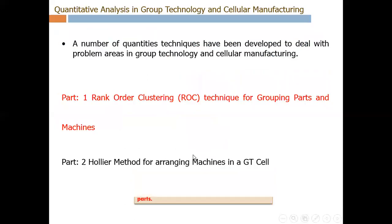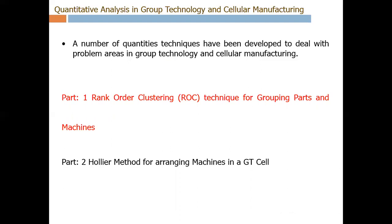Now when we talk about quantitative analysis in group technology and cellular manufacturing, there are various techniques available to deal with problems related to group technology and cellular manufacturing. We will mainly focus on two techniques. In this video we will focus on part 1 — the rank order clustering technique for grouping parts and machines. The second part, in the following video, will cover the whole earth method for arranging machines in group technology cells.